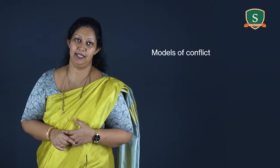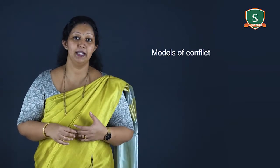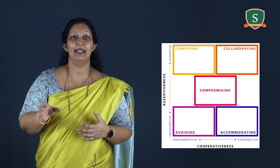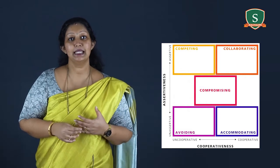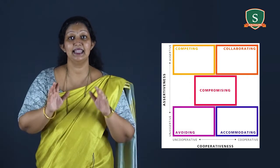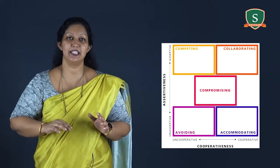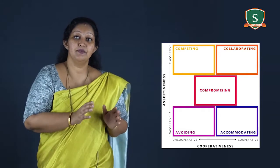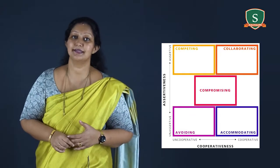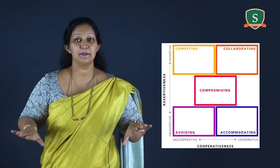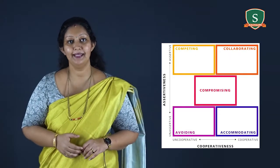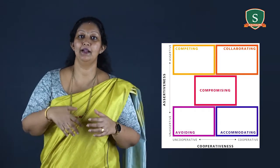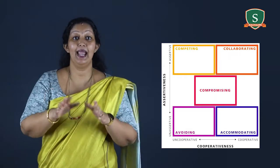Now let's come to models of conflict. The Thomas-Kilman conflict model comprises five key components along two separate parameters: assertiveness and cooperativeness. The model defines assertiveness as the extent to which an individual attempts to satisfy his or her own concerns, and cooperativeness as the extent to which an individual attempts to satisfy the other person's concerns. Assertive strategies for managing conflict encompass competing and collaborating, while cooperative methods involve avoiding and accommodating.